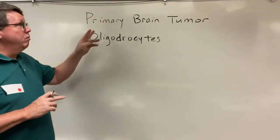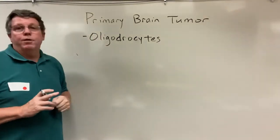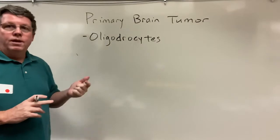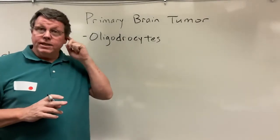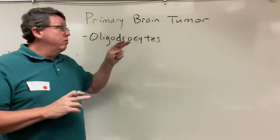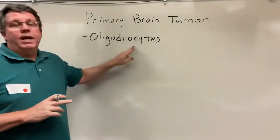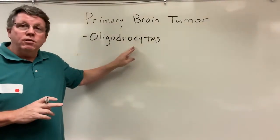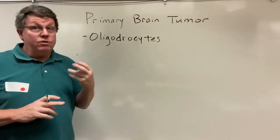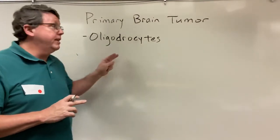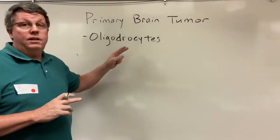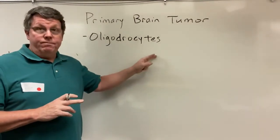Okay everybody, so today we're going to be talking about primary brain tumors. In the last video we talked about astrocytomas, and in this one we have something called oligodendrocytes and the tumor is going to be called oligodendroglioma.